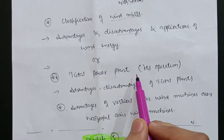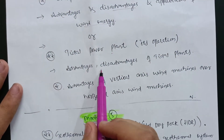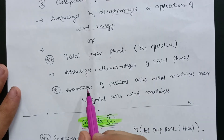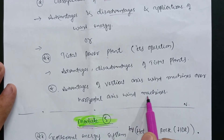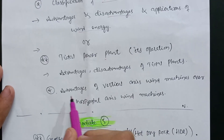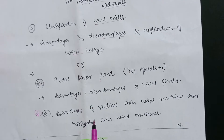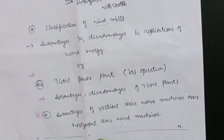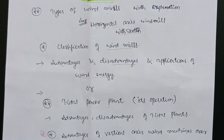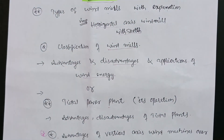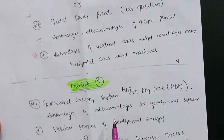In the alternate part of Module 4, there is the tidal power plant with its operation — you have to explain the tidal power plant and its advantages and disadvantages. Also, advantages of vertical axis wind machines over horizontal wind machines is an important question from this alternate part. I prefer you just go through the first part — the windmill part — as the horizontal axis windmill is a definite question and will hopefully appear this time as well.